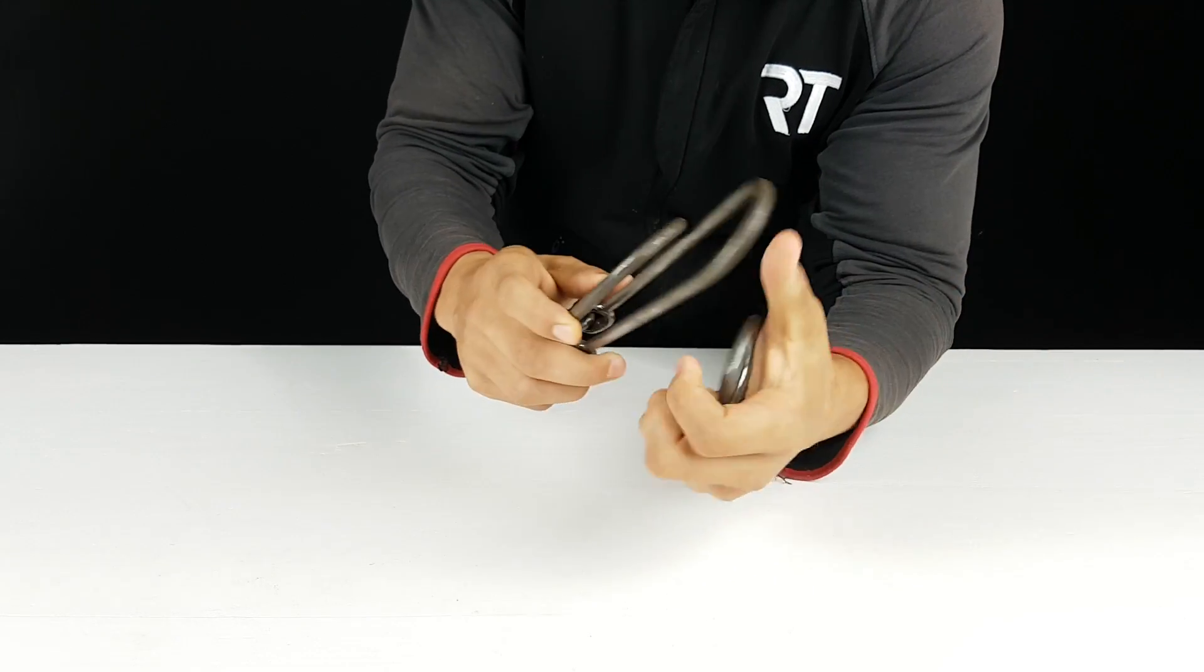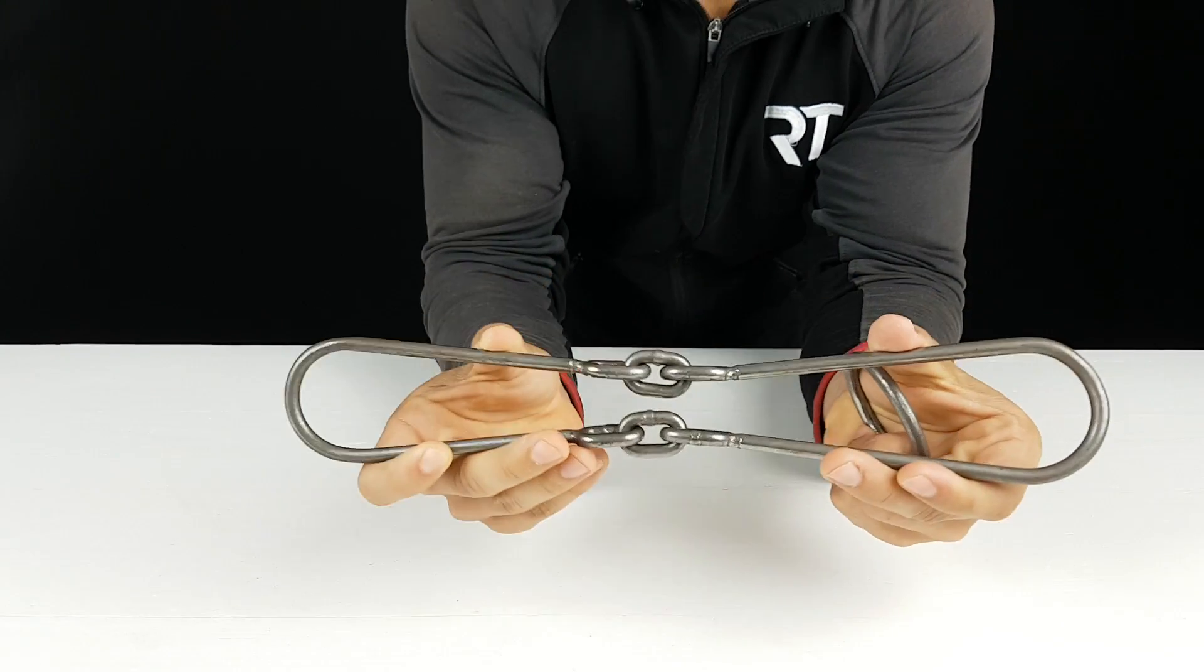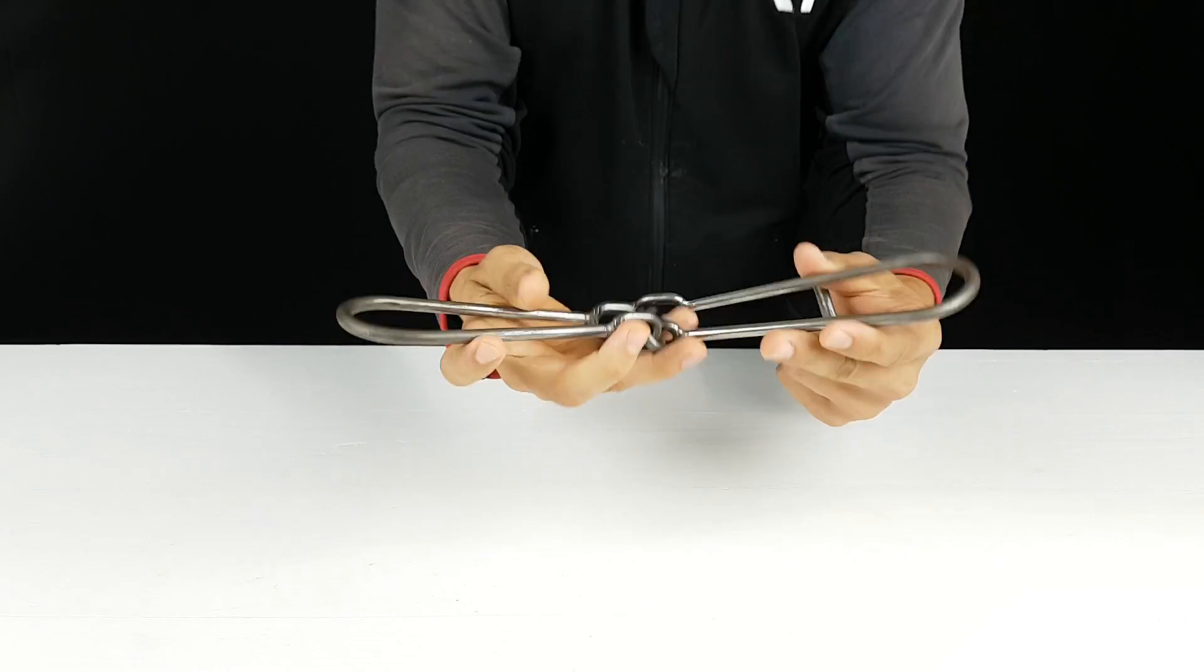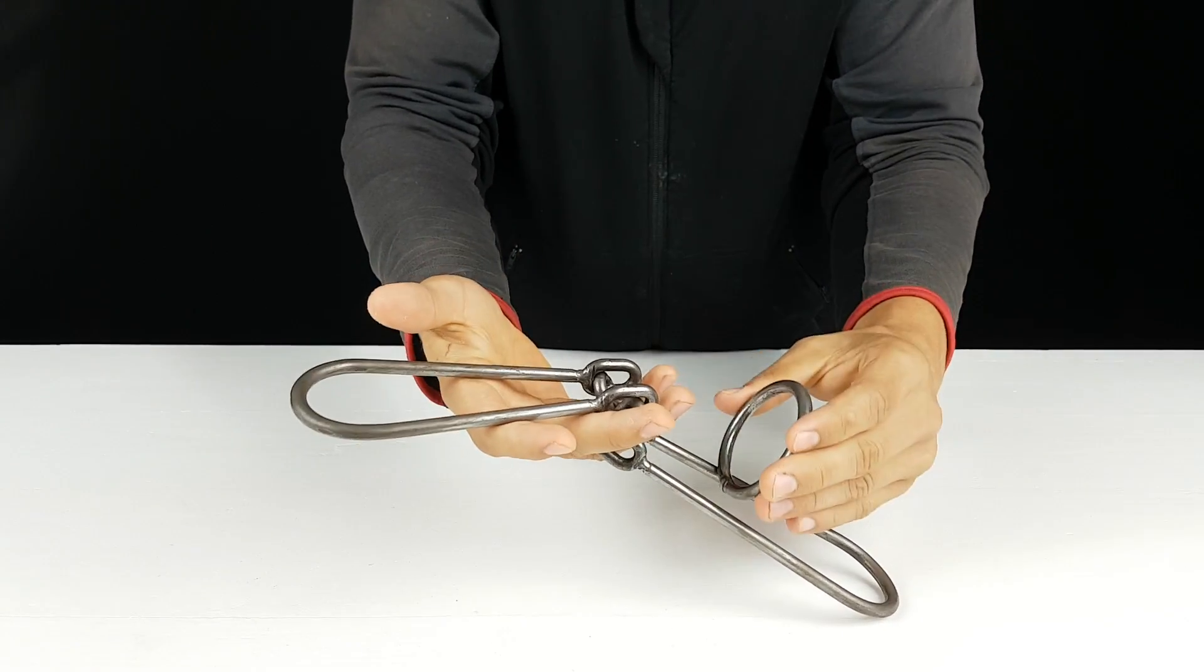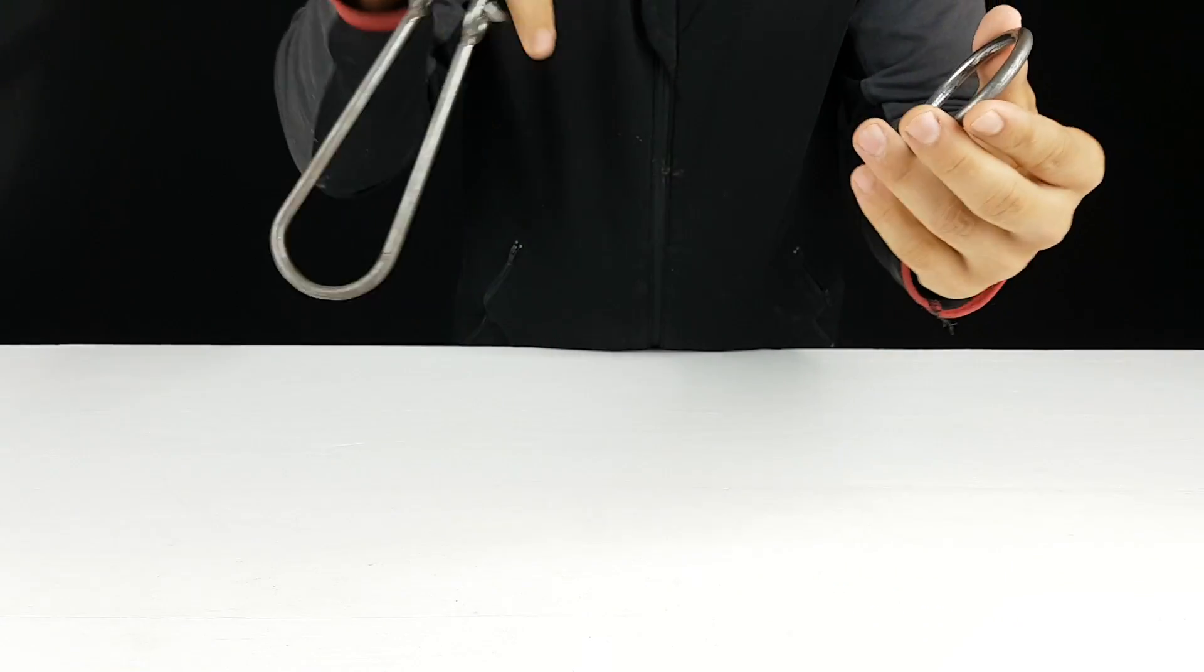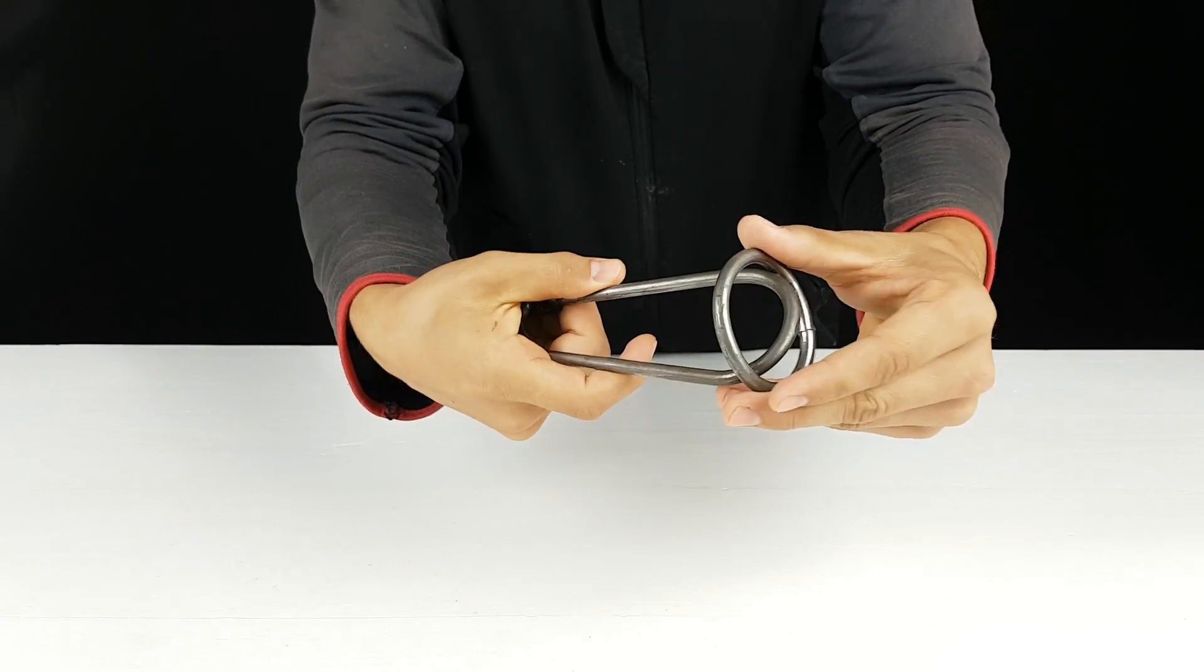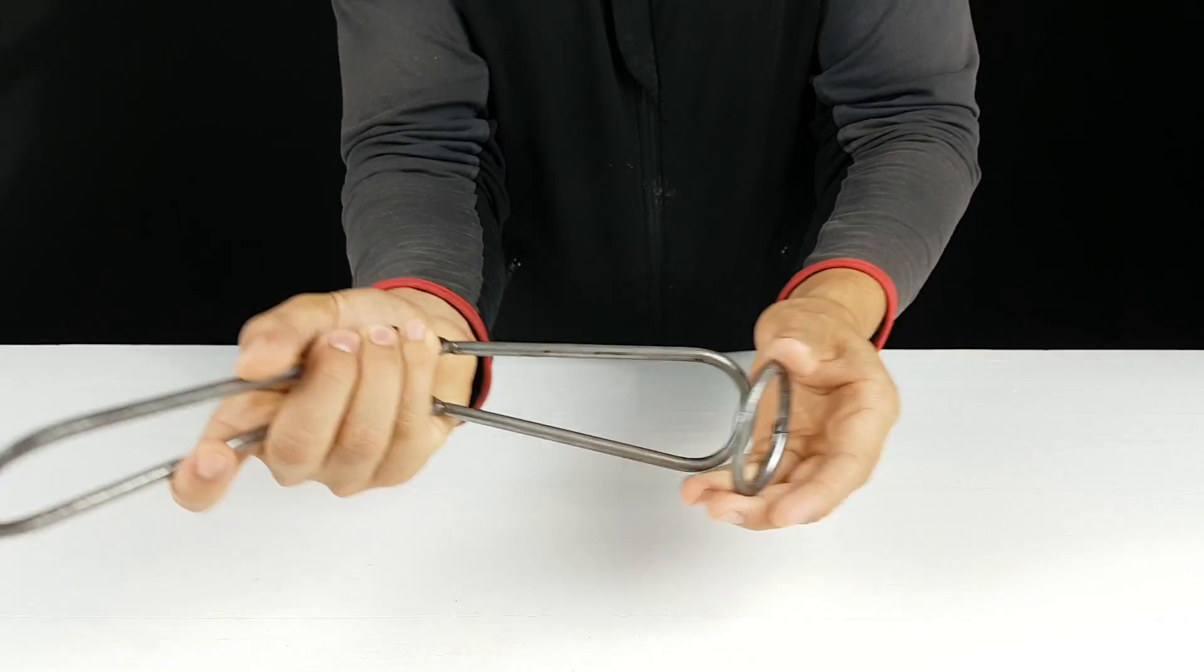I have a metal ring and these two steel ends. The challenge is to get this metal ring between the steel. As you can see, it's not possible from this side, and it's not possible from this side.